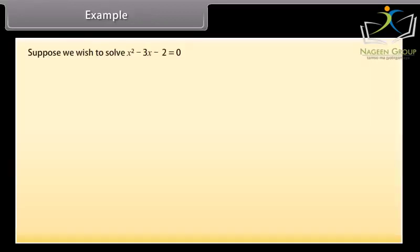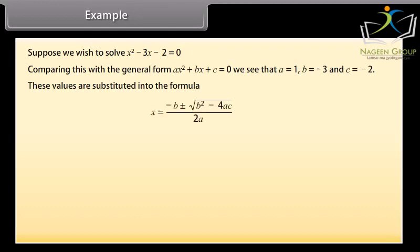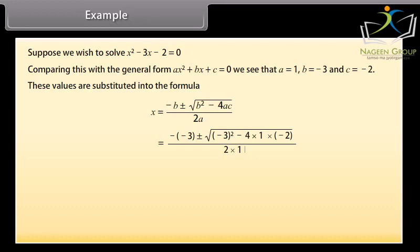Example: suppose we wish to solve x² − 3x − 2 = 0. Comparing with ax² + bx + c = 0, we see that a = 1, b = −3, and c = −2. Substituting into the quadratic formula: x = [−(−3) ± √((−3)² − 4(1)(−2))] / (2×1) = (3 ± √17) / 2. These solutions are exact.